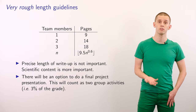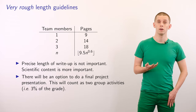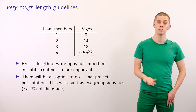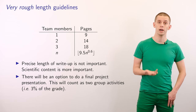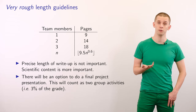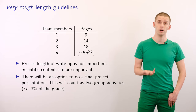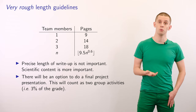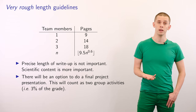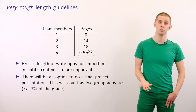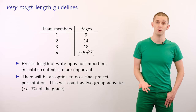Let me provide some very rough length guidelines for the final project. If you're doing a single person project, we'd expect that to be around nine pages, and a two person project would be around 14 pages. A three person project would be around 18 pages. And if you wanted to generalize this to n people, then it would roughly work out as the floor operator applied to 9.5 times n to the 0.6 power.